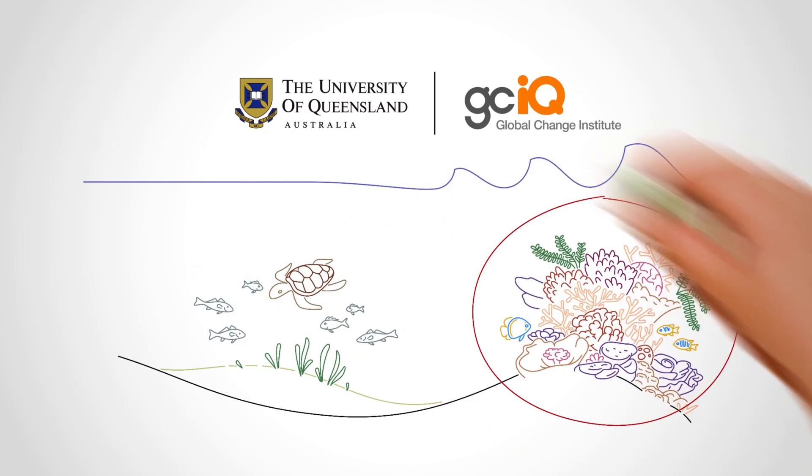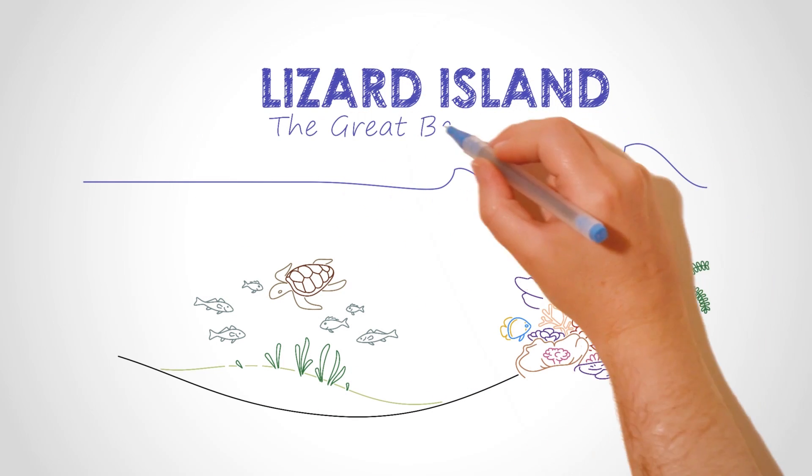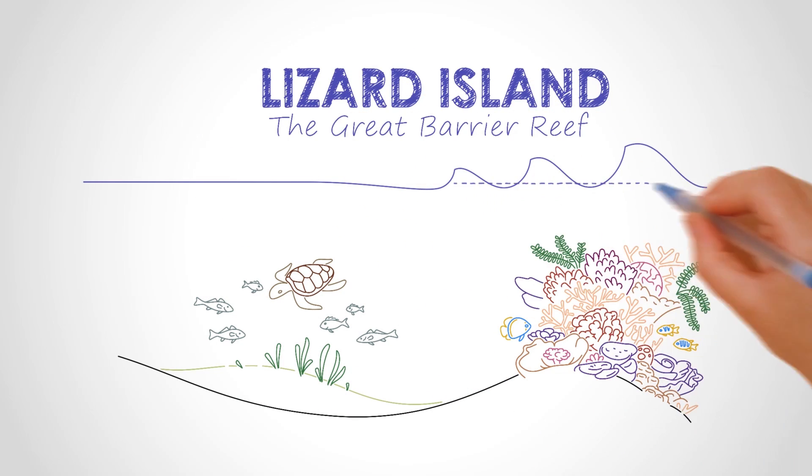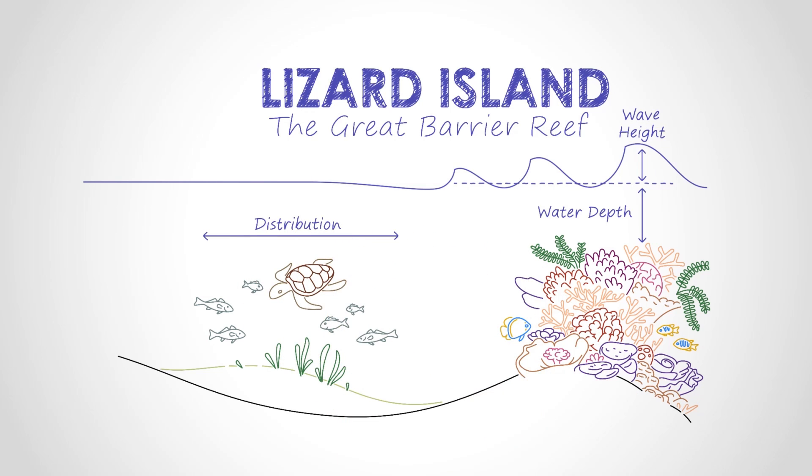To do so, we collected information at Lizard Island on the Great Barrier Reef. First, we measured water depth, wave height, and the distribution of marine habitats to see how environmental conditions affected the distribution of seagrass.